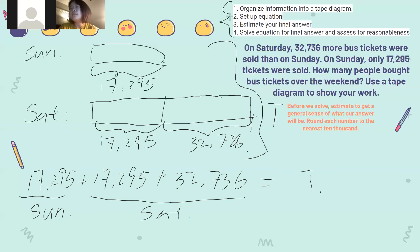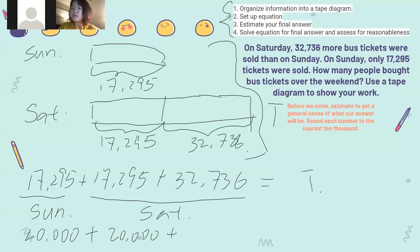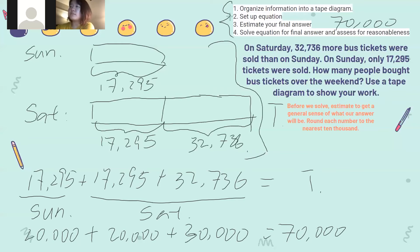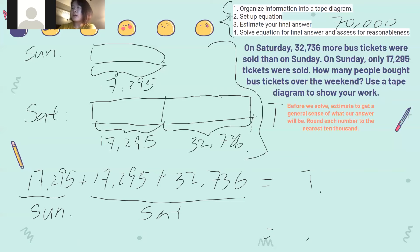And move to the third step: estimate your final answer. Both numbers are five-digit numbers, so we can choose to round to the 10,000 place. For 17,295, we can round it to 20,000. And 32,736 we can round to 30,000. So 20,000 plus 20,000 is 40,000, and 40,000 plus 30,000 is 70,000. So this is our estimated final answer, which is 70,000. Our final answer should be close to 70,000; otherwise your answer cannot be correct.